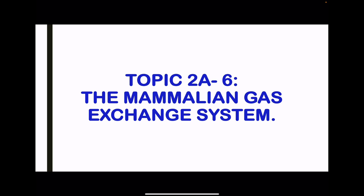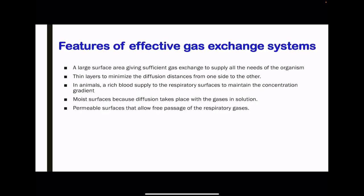In topic 2A6: the mammalian gas exchange system. Features of effective gas exchange systems include a large surface area, which gives sufficient gas exchange to supply all the needs of the organism; thin layers to minimize diffusion distances for faster diffusion; a rich blood supply in animals to carry away oxygen immediately and maintain a steep concentration gradient; moist surfaces because gases are dissolved in solution for transport; and permeable surfaces that allow free passage of respiratory gases.